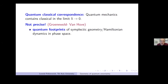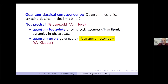This gives rise to two problems. The first problem is to detect quantum footprints of asymptotic geometry, topology, or Hamiltonian dynamics in the phase space. This is an exciting task that I've been talking about for a couple of years — it's a very beginning, but it's not my topic for today.